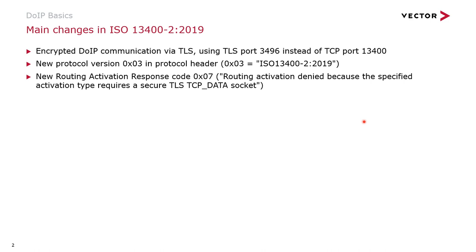Additionally, a new protocol version was introduced, which is used in the protocol header, and there is a new Routing Activation Response Code 7, which indicates to the tester that the DoIP ECU refuses unencrypted communication.